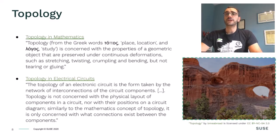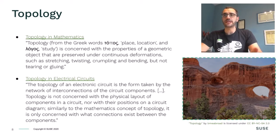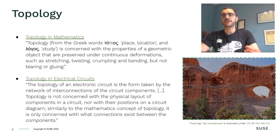For some background, the word topology comes from mathematics and geometry, where it refers to properties of an object that remain invariant even after specific transformations such as stretching, twisting, crumpling, and bending. In electronics and informatics instead, it is used to describe the interconnections and relationships between the various components of a computer system.